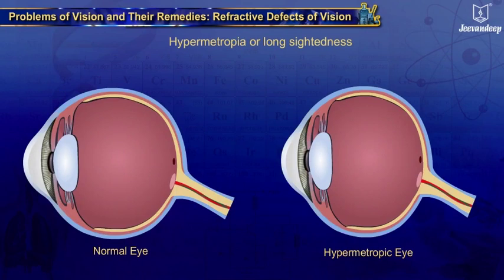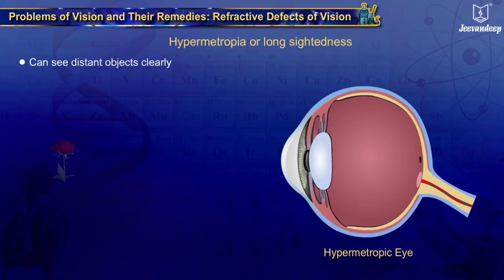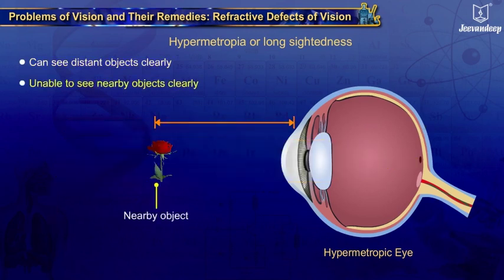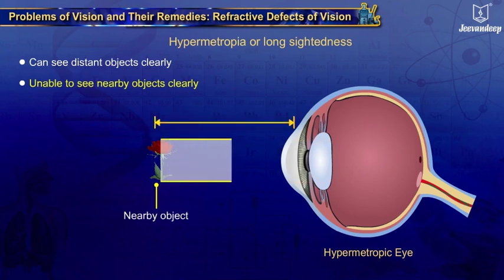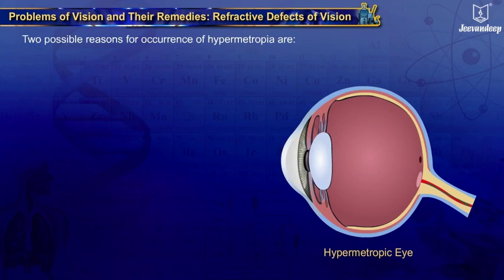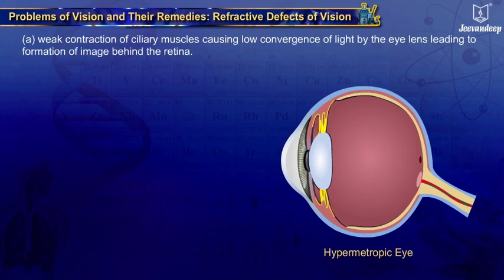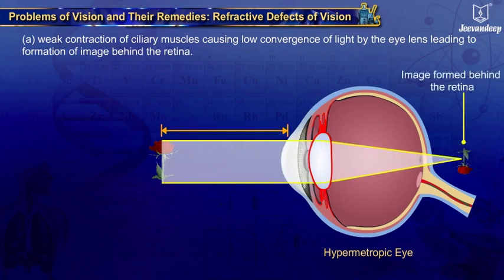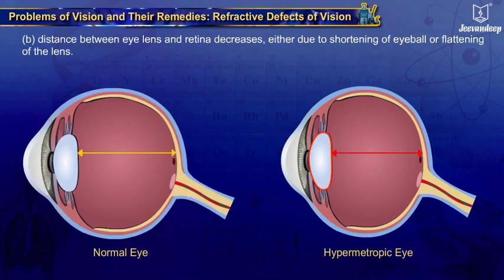Hypermetropia is the defect in which the human eye can see distant objects clearly but is unable to see nearby objects clearly. In this case, the image of a nearby object would fall behind the retina. Two possible reasons for occurrence of hypermetropia are: A. Weak contraction of ciliary muscles causing low convergence of light by the eye lens, leading to formation of image behind the retina. B. Distance between eye lens and retina decreases either due to shortening of the eyeball or flattening of the lens.